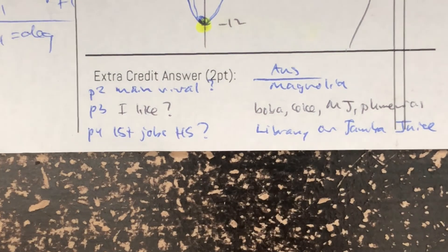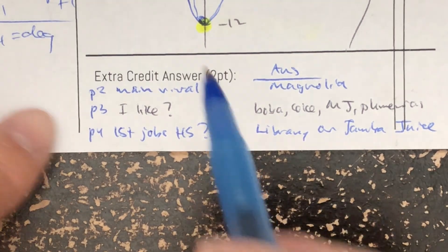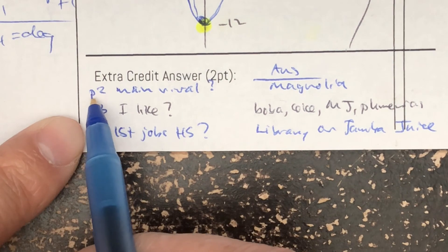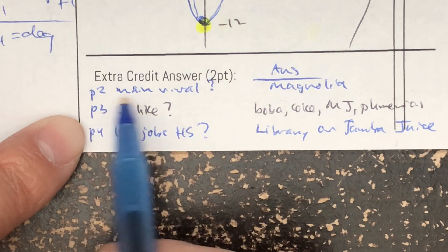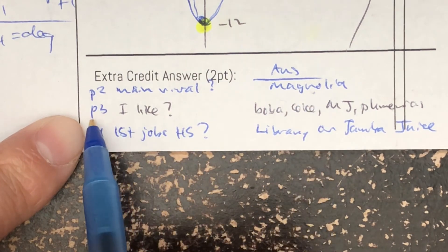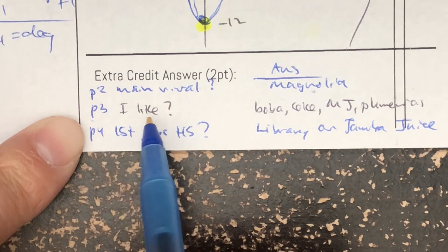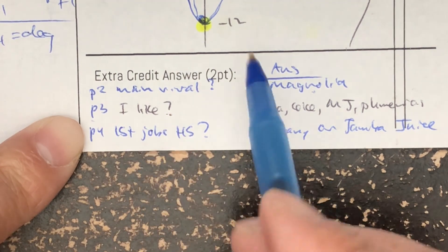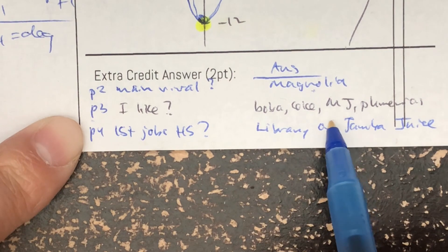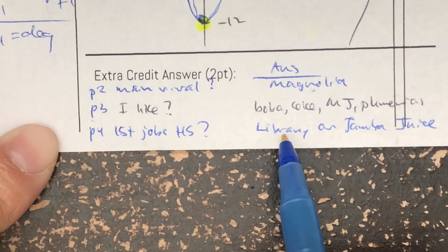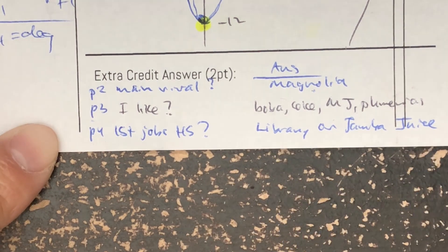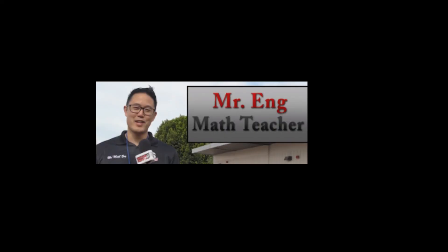For the extra credit question: Period 2, the main rival we have is Magnolia. Period 3 — from the first day introduction video — what do I like? Four things count: Boba, Coke, Michael Jordan, or Paul Marius. Period 4, my first job in high school was the library or Jamba Juice. Math — I love math.